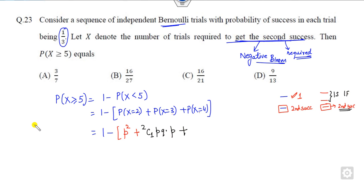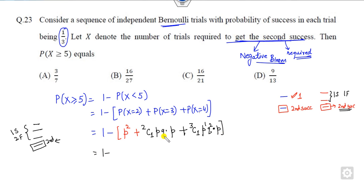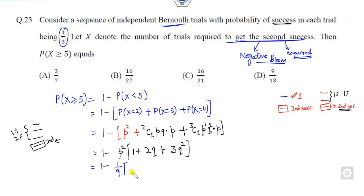For x = 4: you conduct four experiments and the fourth is the second success, meaning out of the first three there is one success and two failures. The probability is C(3,1)·p·q²·p. Taking p² as common, the expression becomes: p²·[2 + 2q + 3q²]. Here C(2,1) = 2 and C(3,1) = 3. Now p = 1/3 and q = 2/3.